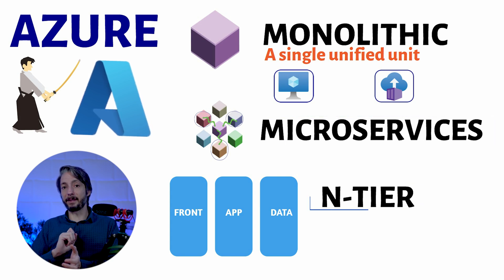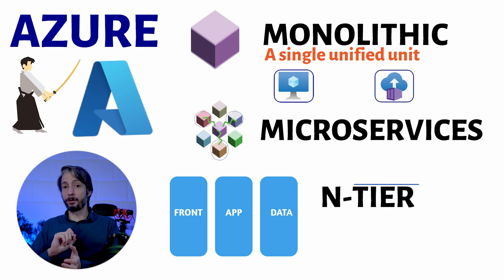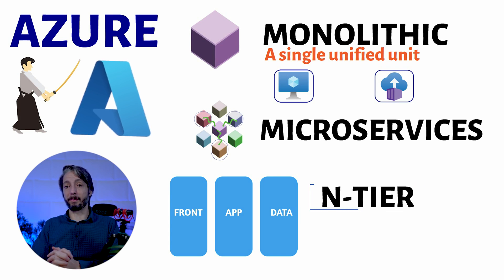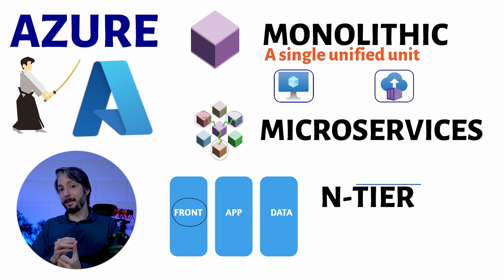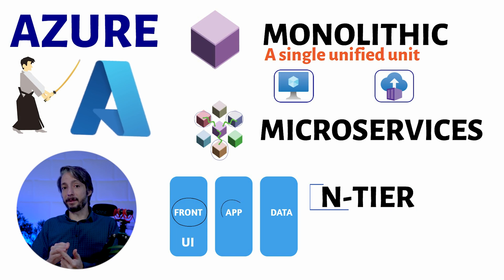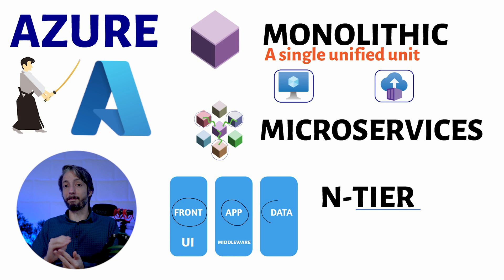An N-tier application is one which is usually split up into three tiers. We have a front-end for the UI, an application tier which contains the middleware codebase, and a database which is the backend database.